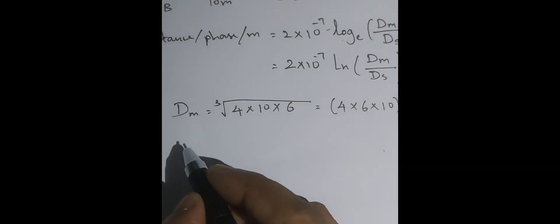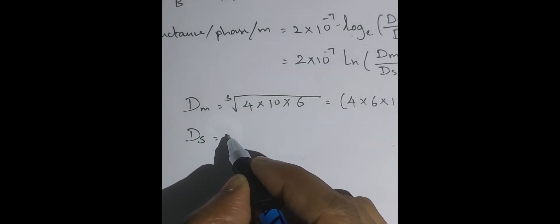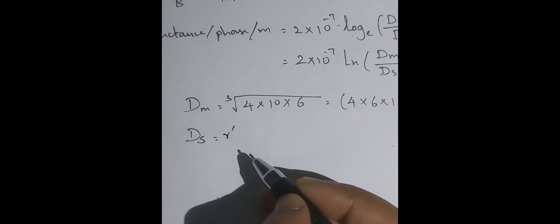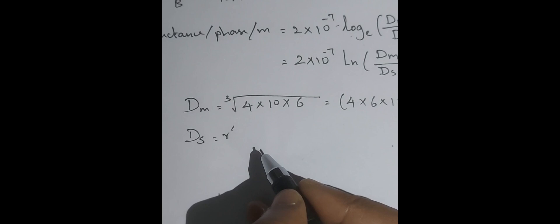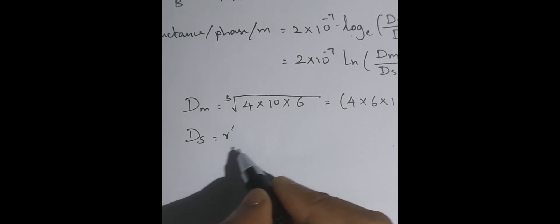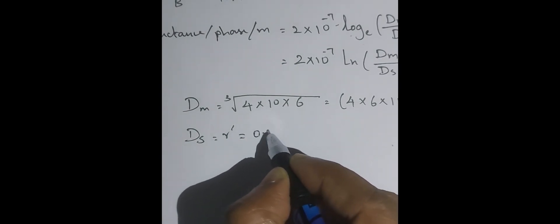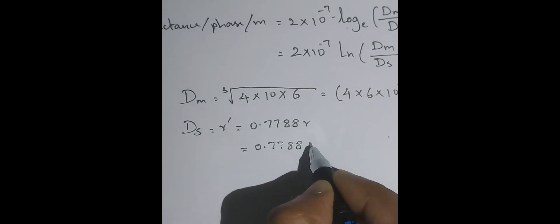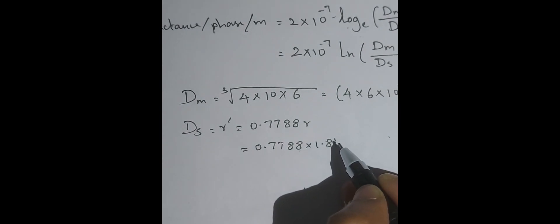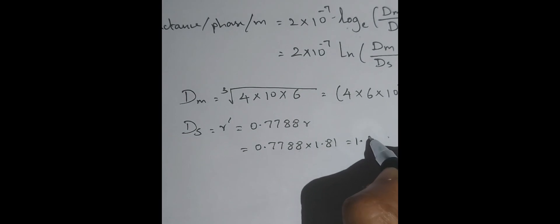Next we have to find ds. In this case, ds is nothing but r dash, because each phase has only a single conductor. r dash equals 0.7788 × r. So r dash equals 0.7788 × 1.81 centimeter, which gives 1.41 centimeter.